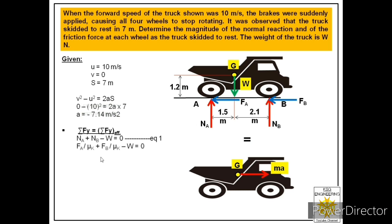We replace NA with FA divided by μk and NB with FB divided by μk, since the friction force at the wheels equals μk times the normal reaction. This gives us (FA + FB) / μk − W = 0, which simplifies to FA + FB = μk × W. Since FA and FB are unknown, we leave this as Equation 1.